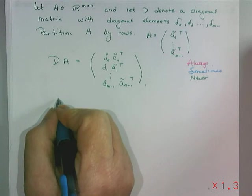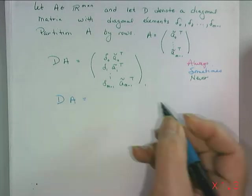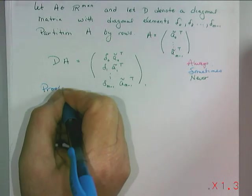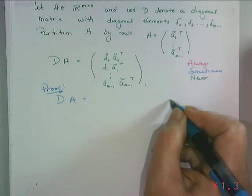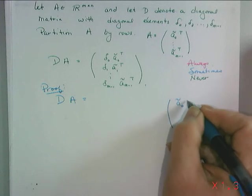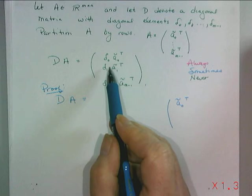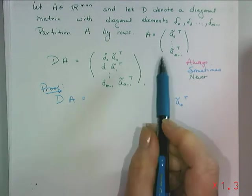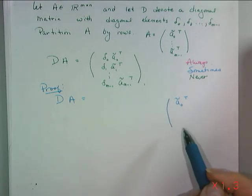So let's look at what D times A will be. Well first of all, A we want to partition by its rows. How do I know? Well because the answer has something to do with the rows of A so it makes sense to partition A by its rows.